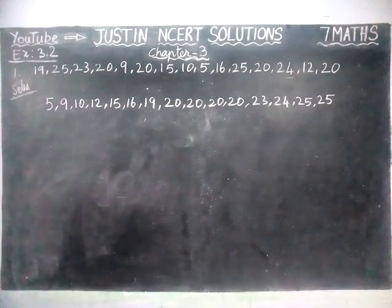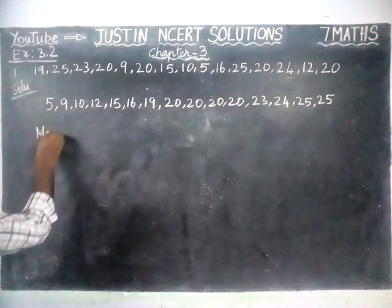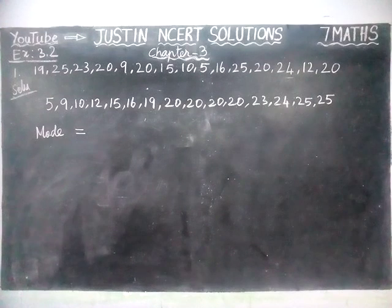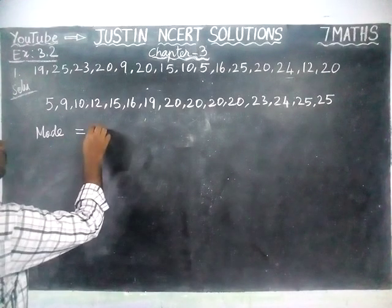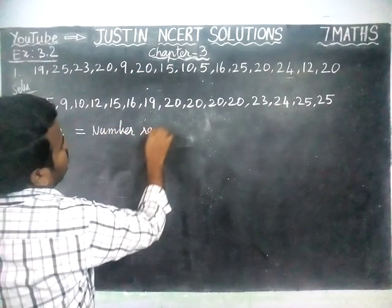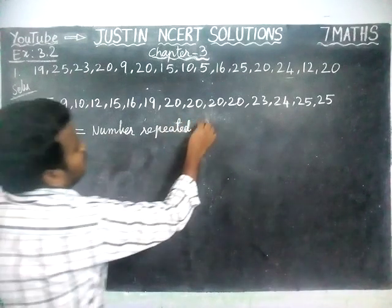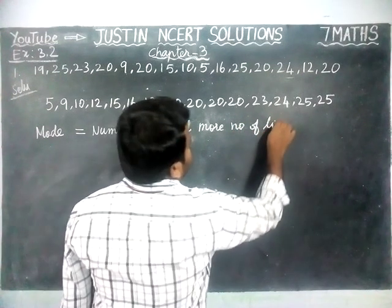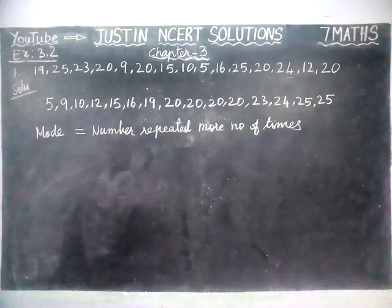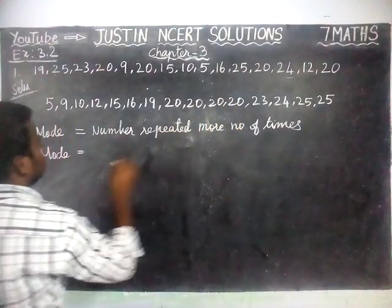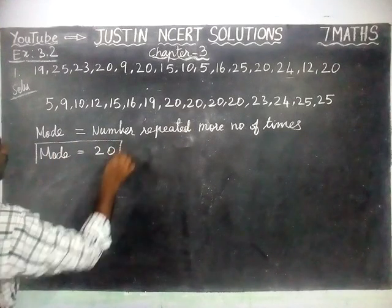Now we are going to find the mode of the given data. Mode means the number which occurs the largest number of times. Here, 20 occurs 4 times. So mode is equal to 20. The mode of the given data is 20.